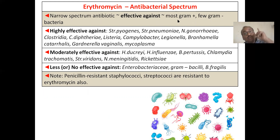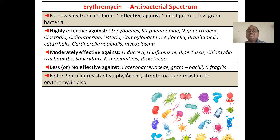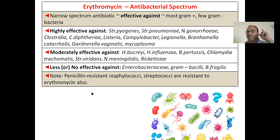Erythromycin antibacterial spectrum: it is a narrow-spectrum antibiotic — very effective against most gram-positive organisms, effective against some gram-negative but fewer, which is why it is considered narrow spectrum. It is highly effective against some organisms, moderately effective against others, and less effective against Enterobacteriaceae. Penicillin-resistant Staphylococcus and Streptococcus are also resistant to erythromycin.